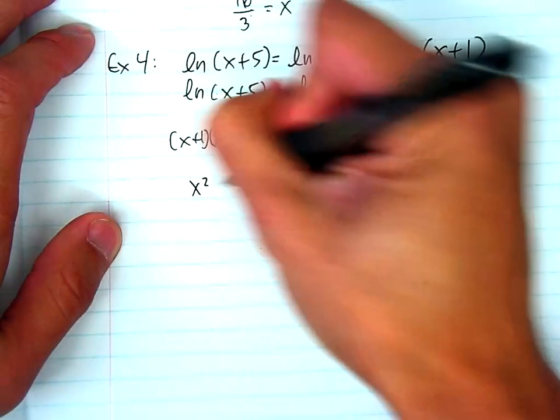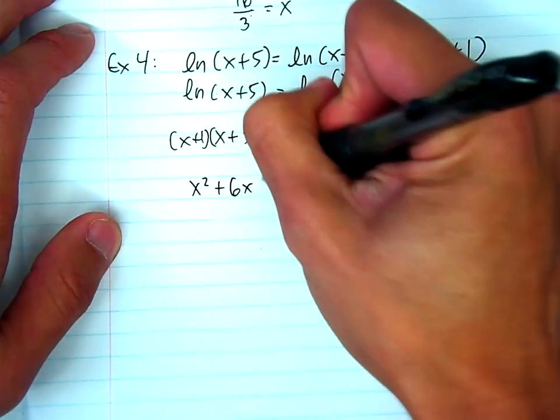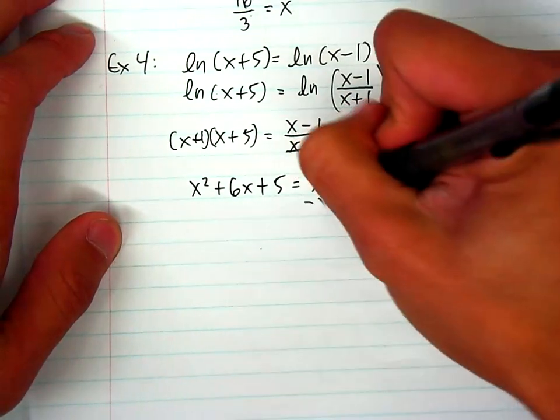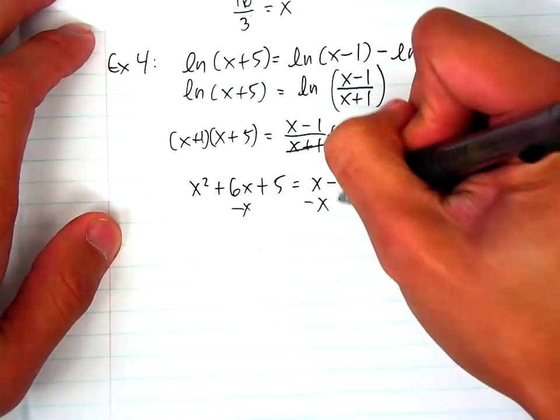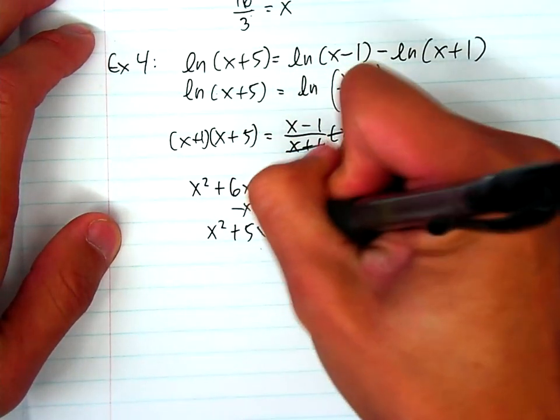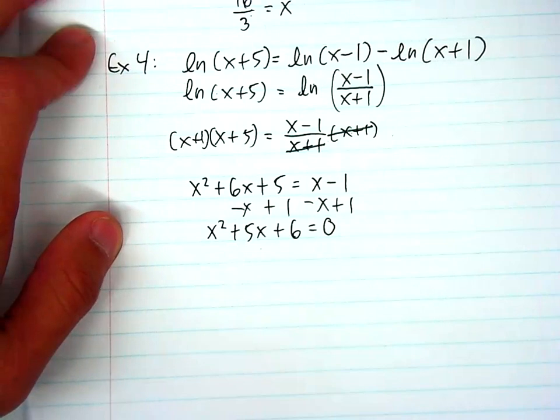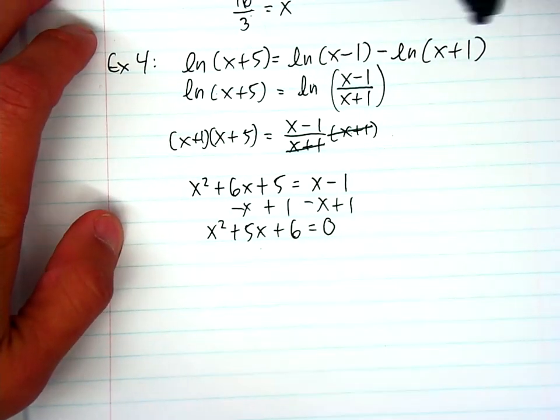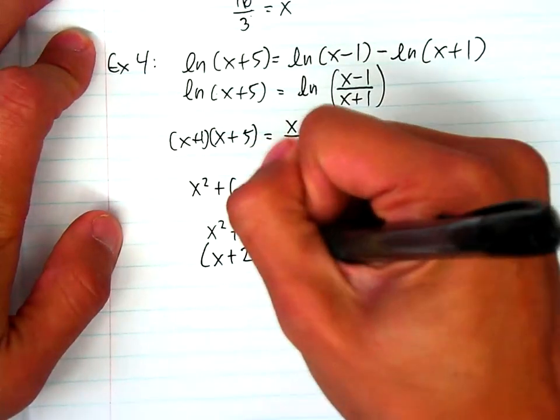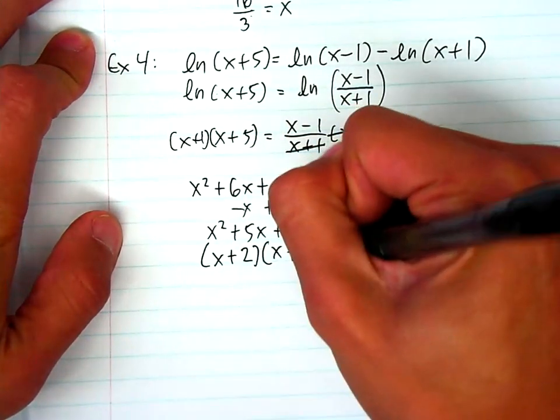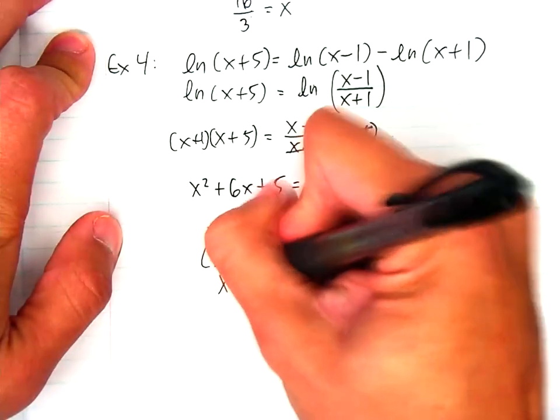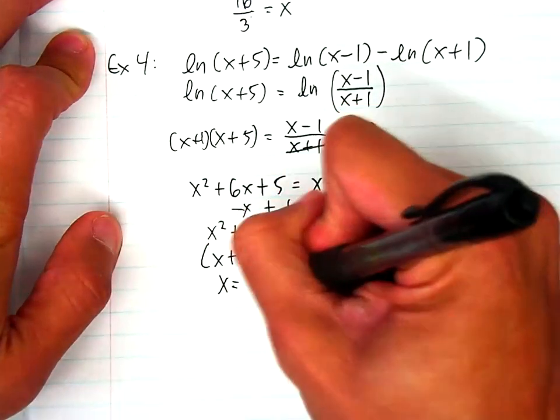And then I'm going to FOIL that out, so that'll become x squared plus 6x plus 5 equals x minus 1. Then I'll move everything to one side, so I'll subtract x, and I'll add 1. So it'll be x squared plus 5x plus 6 equals 0. And then like any quadratic, I'm going to always try to factor first, and it factors nicely, actually. So it'll be x plus 2, x plus 3 equals 0. And then if I solve for x, I set each equation equals 0, I'll find out that x equals negative 2 and negative 3.